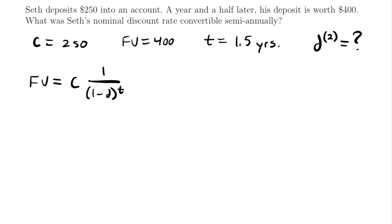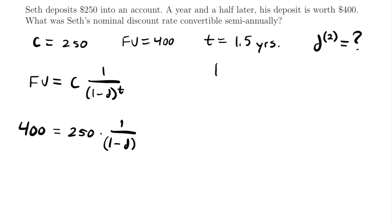Plugging in the values we know: 400 equals 250 times 1 over (1 minus D) to the power of T. Since we want to solve for a semi-annual discount rate, we convert the time. 1.5 years times 2 semi-annual periods per year gives us 3 semi-annual periods. So our power is 3, and when we solve for D it will be an effective semi-annual discount rate. Dividing both sides by 250, we get 1.6 equals 1 over (1 minus D) to the third power.